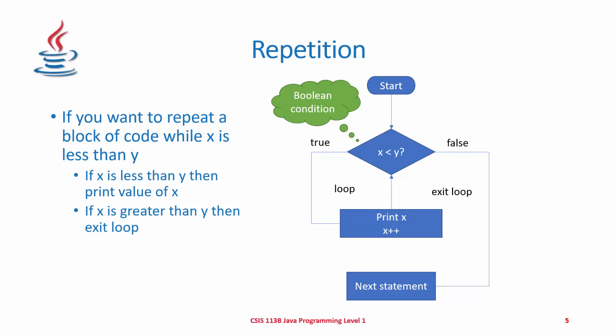Looking at the graphic, after the start, we have our boolean condition checking X to see if it's less than Y. We've already declared and initialized both variables. As long as X is less than Y (true), we continue the loop — printing X and incrementing X — then going back to test the condition again. This continues until X becomes equal to or greater than Y, at which point the condition resolves to false, we exit the loop, and process the next statement after the loop block.